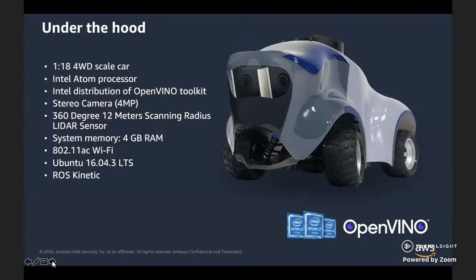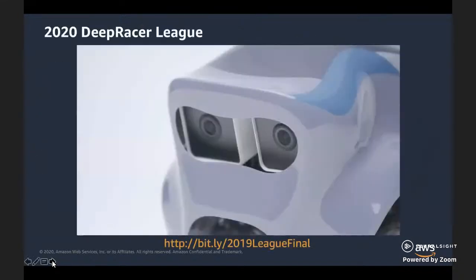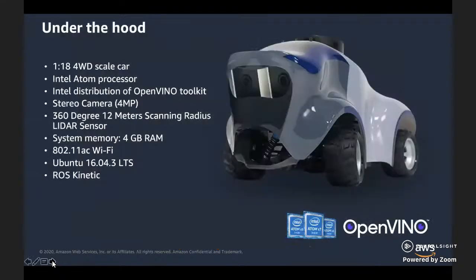If you already have a DeepRacer car, it is possible to buy a sensor kit to upgrade your current DeepRacer to an Evo model. Both are available on Amazon.com right now. However, you don't have to own a car to start learning — you can already start in the console. If you go into the 3D simulator, that's where the building takes place. We'll go into it further in the presentation.